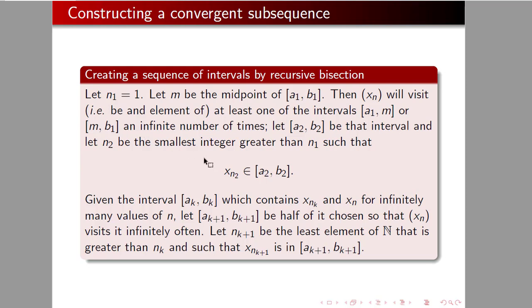Now, let a2, b2 be one of the intervals that the sequence visits an infinite number of times, and let n sub 2 be the smallest integer greater than n sub 1, such that x n sub 2 is an element of that interval a2, b2.